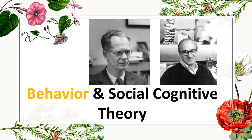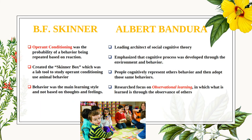Behavioral and Social Cognitive Theory — this covers B.F. Skinner and Albert Bandura. Skinner developed operant conditioning, which said that the probability of a behavior being repeated was based on its consequence — if a child did something good and got ice cream, they're probably going to repeat that behavior, whereas punishment could hinder them from doing that behavior again. Albert Bandura believed in social cognitive theory, emphasizing that development occurred through the environment and behavior observed — observational learning.